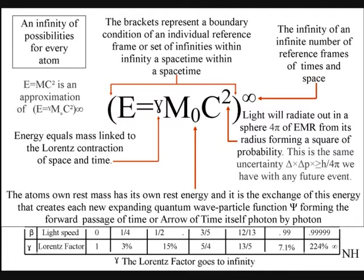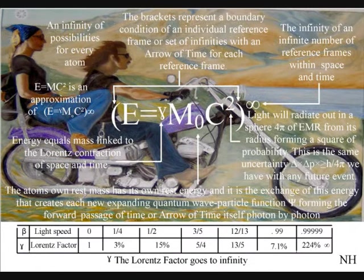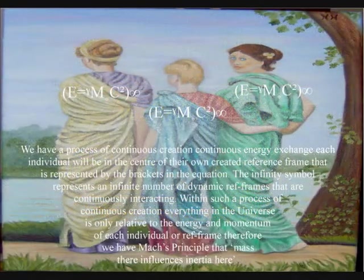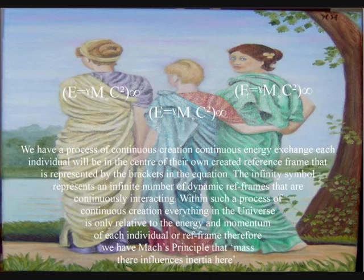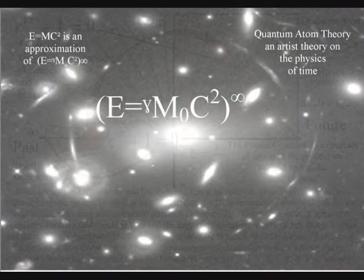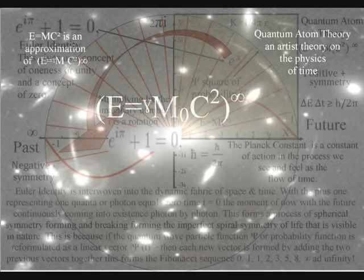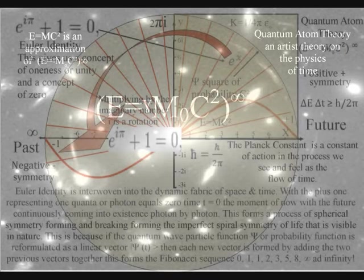The c² is light radiating out in all directions, forming a sphere of probability. It is a probability wave of a potential future event, and during the act of measurement, the magnitude squared — or c² — gives a probability for different potential future outcomes. The brackets represent the dynamic boundary condition of the reference frame, formed by the surface area of the sphere that forms a two-dimensional boundary condition. The infinity symbol represents the whole universe as an infinite number of dynamic reference frames that are continuously interacting, forming the uncertainty of everyday life.